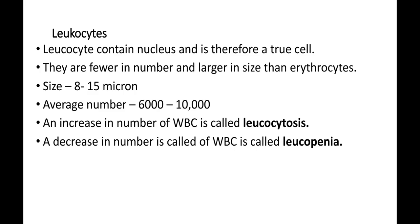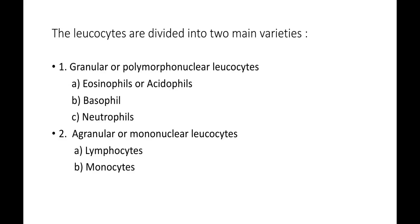Isi prakar yadi WBC ki sankhya blood mein 10,000 se upar badh jaati hai to isko hum kehte hain leukocytosis. Leukocytes ko hum do main varieties mein divide kar sakte hain: pehla granular leukocytes aur doosra agranular leukocytes. Yeh division based hota hai on the shape of the nucleus, presence aur absence of the granules in the cytoplasm, and the type of granules.